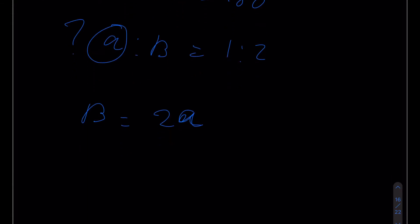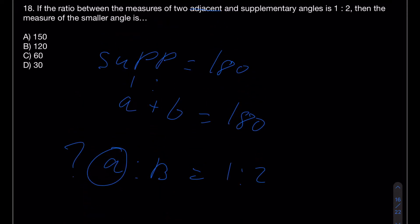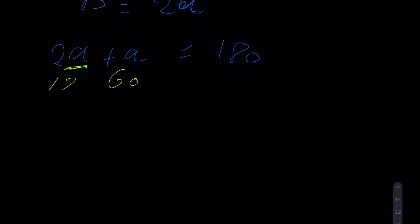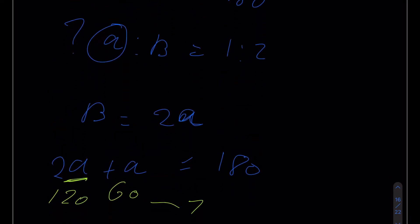So the equation becomes 2a + a = 180, which means 3a = 180. Looking at the choices: 150 — doubling it doesn't give 180; 120 — doubling gives 240, not 180. But 60 doubled is 120, and 60 + 120 = 180. So if a = 60, then 2a = 120, giving 180. The answer is 60 degrees.